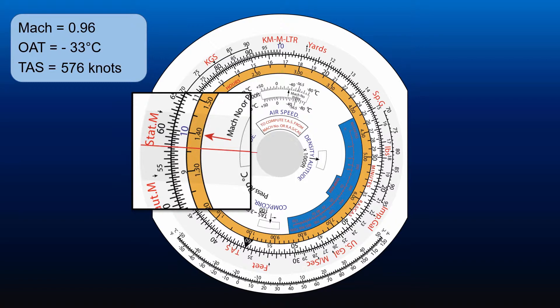Having set the Mach number index against the temperature in the airspeed window, the true airspeed may be read off on the outer scale for any given Mach number at that temperature on the inner scale, or vice versa.